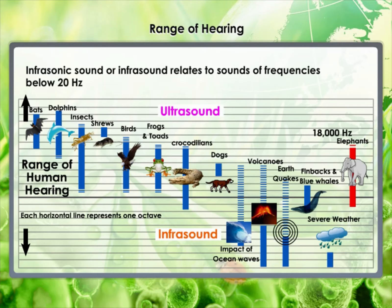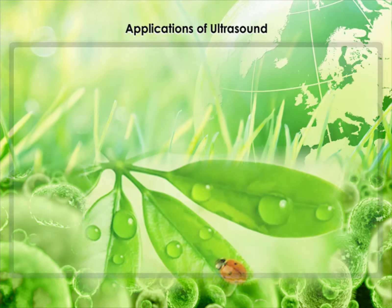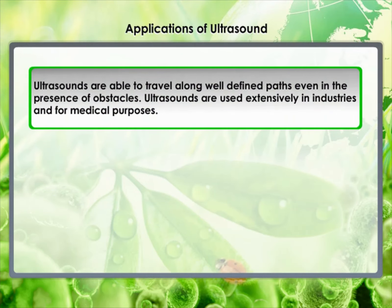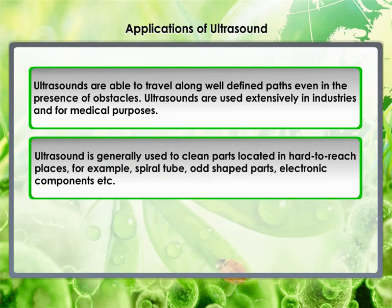Rats also communicate by producing ultrasound. Let's discuss the applications of ultrasound. Ultrasounds are high-frequency waves able to travel along well-defined paths even in the presence of obstacles, and are used extensively in industries and for medical purposes. Ultrasound is generally used to clean parts located in hard-to-reach places — for example, spiral tubes, odd-shaped parts, electronic components, etc. Objects to be cleaned are placed in a cleaning solution and ultrasonic waves are sent into the solution. Due to the high frequency, particles of dust, grease and dirt get detached and drop out, and the objects get thoroughly cleaned.